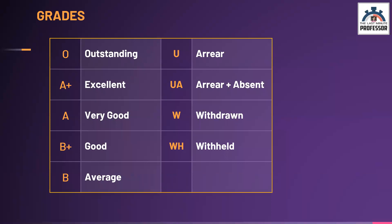A student who has passed the examination obtains one of the grades on the left side of the slide — that is O, A plus, A, B plus, or B. If a student has attempted the exam and failed, the grade would be U. If a student fails due to absence, the grade is UA.